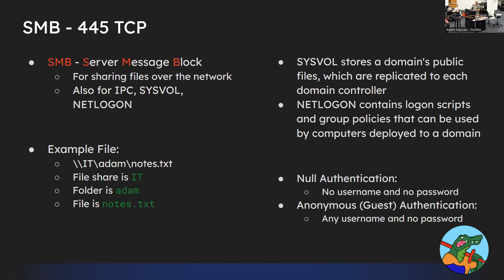SMB stands for Server Message Block. This is basically a remote file share — you can access folders and files that are not on your computer and are on other computers via a network share. It also does IPC (interprocess communication). Sysvol and NetLogon are key shares I'll talk about. In Windows, the root file system is C colon backslash. To access a network share, it's backslash-backslash — for example, \\IT\Atom\notes.txt. That first part is the share name, then the folder, then the file. You can think of it as a folder over the network.